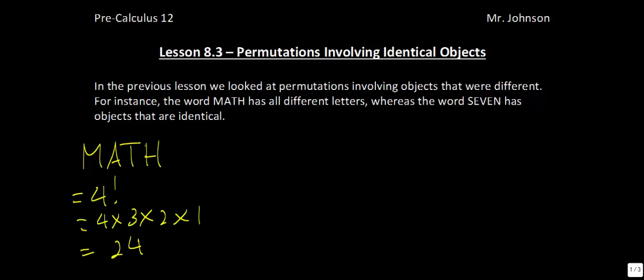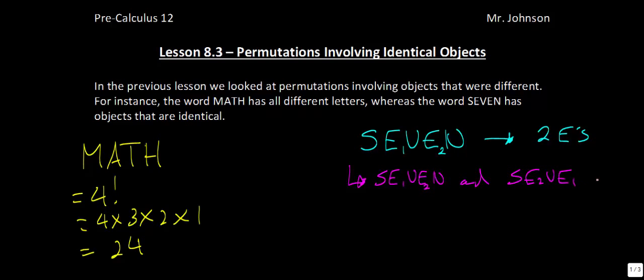Now in this section, what we're going to move to is what happens if we have repeating letters. Let's say we had the word SEVEN. Now if we have the word SEVEN, obviously we have these E's right here. And if you can imagine, if I called this E1 and E2, if I switch those spots, we still have the same permutation. So SEVEN where this is E1 and this is E2, and SEVEN when we change it around where this is E2 and this is E1, are the same arrangements.